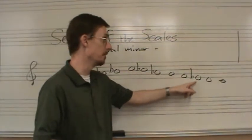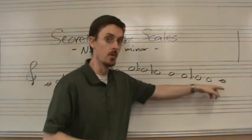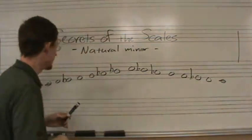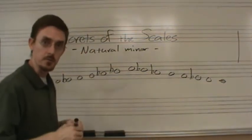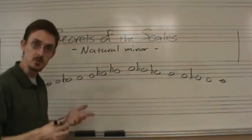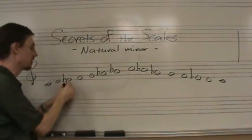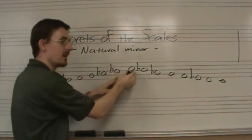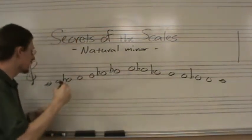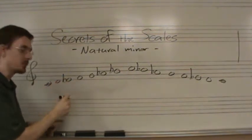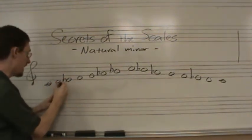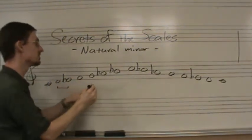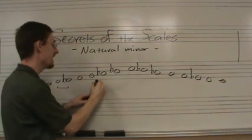What you've probably noticed is that the half steps are in different places. In the major scale, the half steps were between the third and fourth scale degrees and the seventh and eighth scale degrees. In the natural minor scale, the half steps are between re and me — the second and third scale degrees — and between sol and le — the fifth and sixth scale degrees.